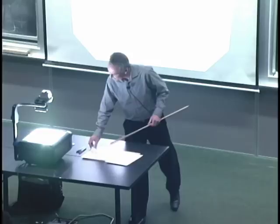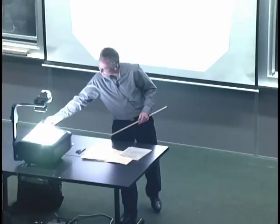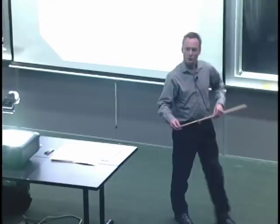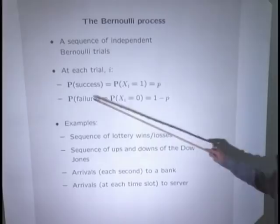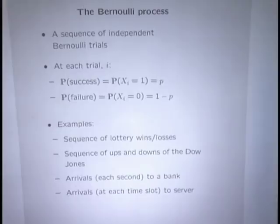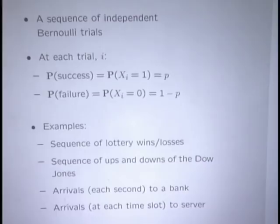The Bernoulli process is nothing but a sequence of independent Bernoulli trials that you can think of as coin flips. The result of each trial can be thought of as heads or tails — or more conveniently, successes and failures — using a one for a success and zero for a failure. Each trial has the same probability of success, p, and the trials are statistically independent of each other.